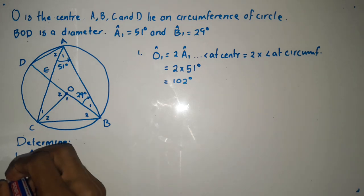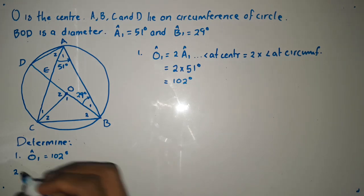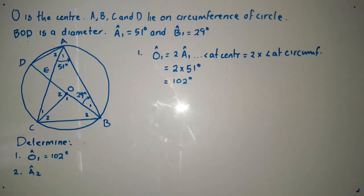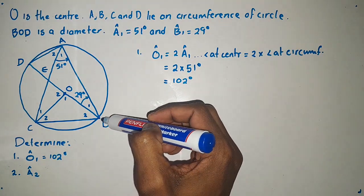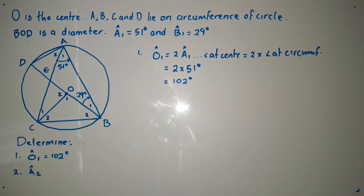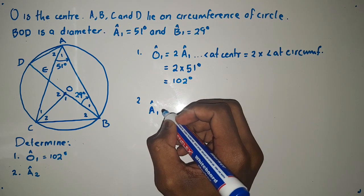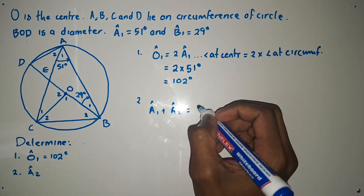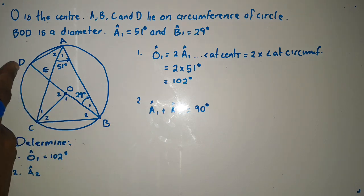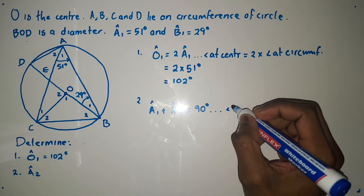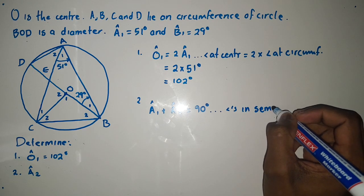The second question is to figure out the value of angle A2. We have a diameter BOD, and A is a point on the circumference. We can say angle A1 plus angle A2 are both subtended by the diameter, so they equal 90 degrees. The reason we use is: angles in a semicircle.